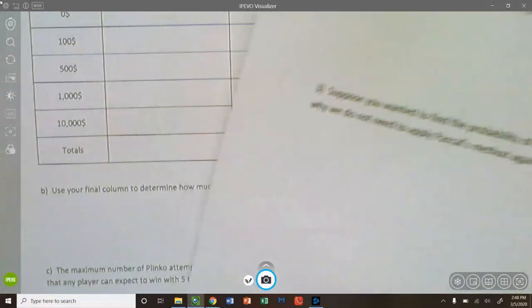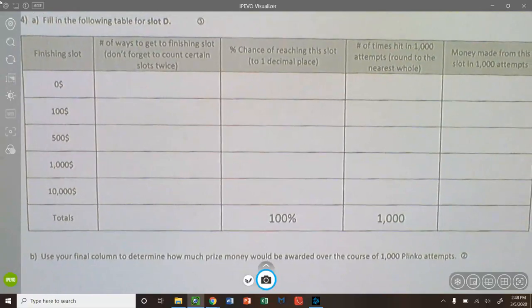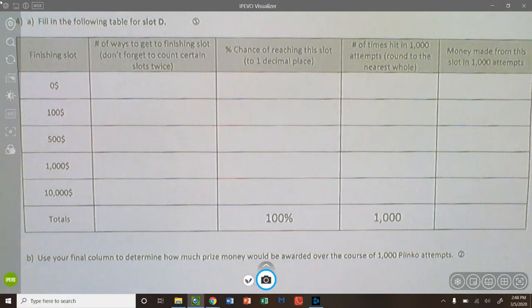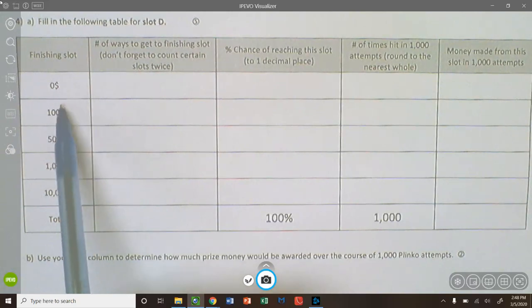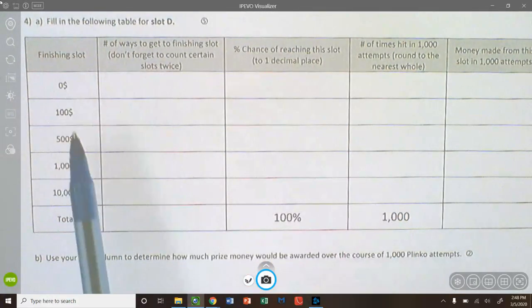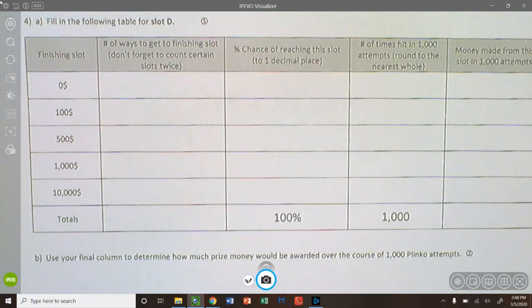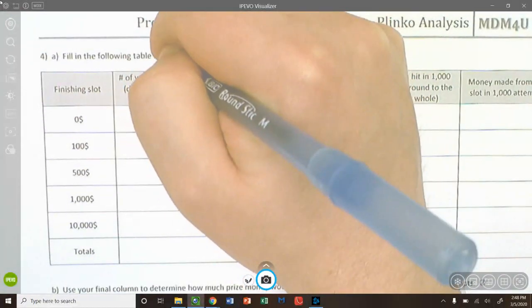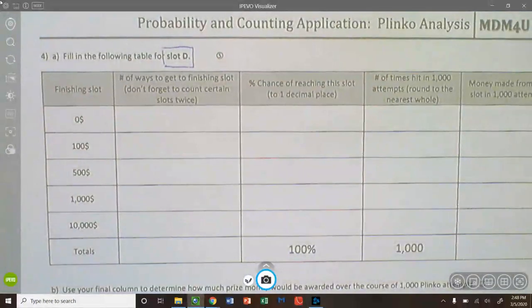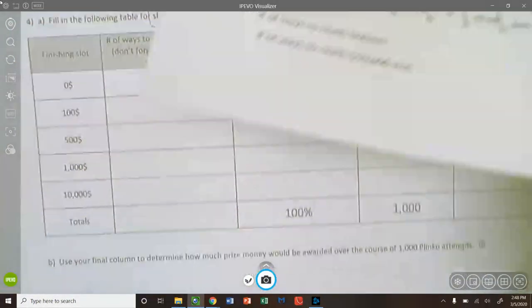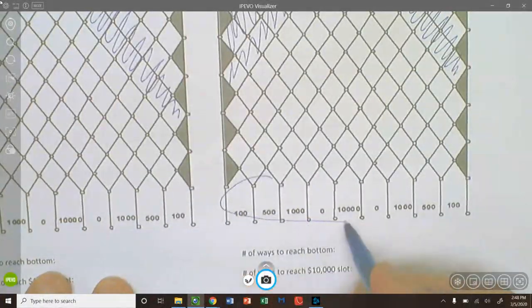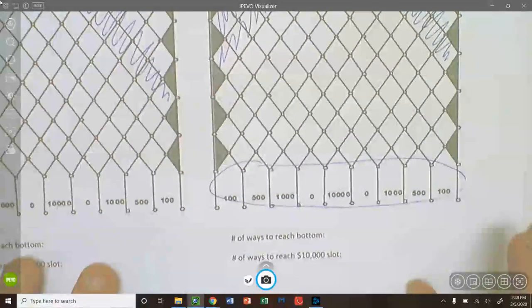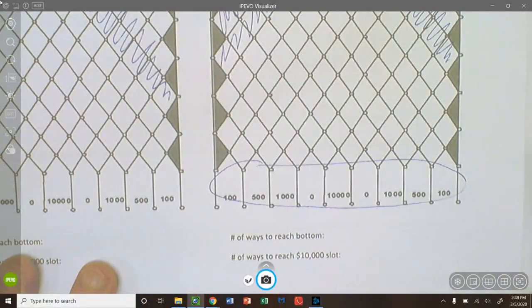After you do number one, you should be able to explain number two and which slot would you drop your chip in to maximize your chance of winning $10,000. It should be clear after you do question one. For question three, you will note that we only did four slots on the Plinko board. So why didn't we do add a slot E, F, and G? Why did we not need to? So think about that and just a little explanation why we didn't have to do those three calculations.